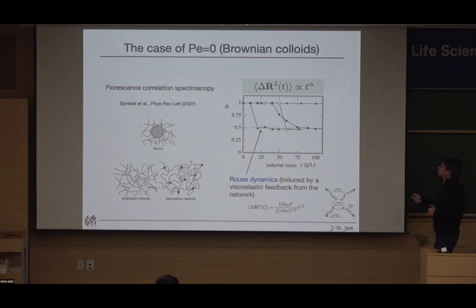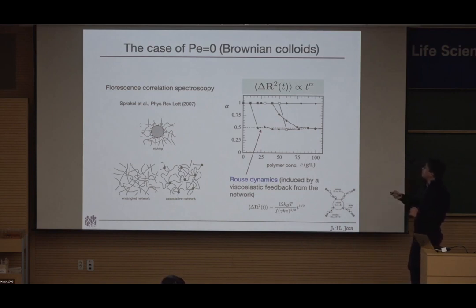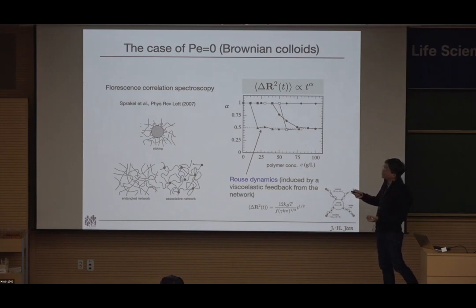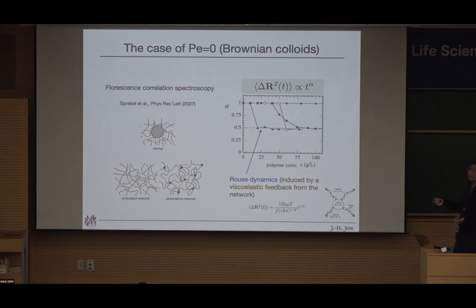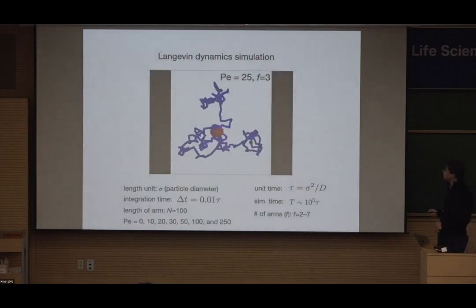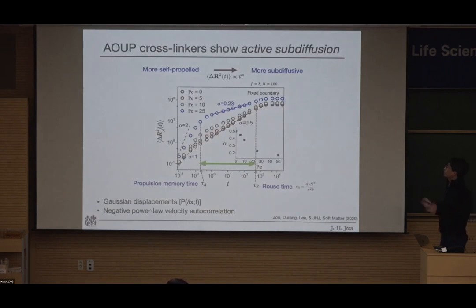We simulated the active particle version, where blue is the flexible chain and red is the active particle. Looking at the MSD: the Brownian particle (black/blue, bottom) shows anomalous diffusion with alpha = 0.5, as expected from Rouse dynamics, eventually reaching a plateau due to fixed boundary conditions. When we turn on activity and increase the Péclet number, the slope becomes smaller — more self-propelled motion gives more negative feedback, resulting in more sub-diffusive behavior.